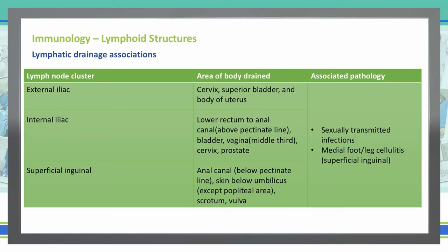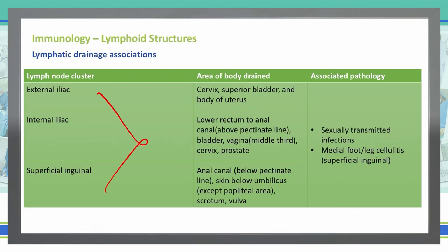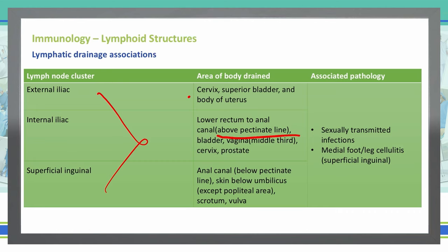Wrapping up our lymph node clusters: the external iliac drains the cervix, superior bladder, and body of the uterus. The internal iliac drains the lower rectum — from where the inferior mesenteric leaves off — continuing to the anal canal above the pectinate line. The bladder, vagina (middle third), cervix, and prostate are also drained by the internal iliac.